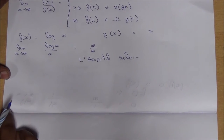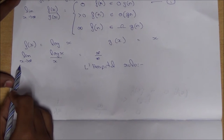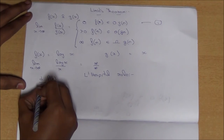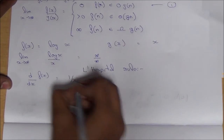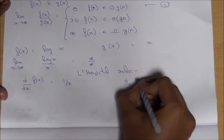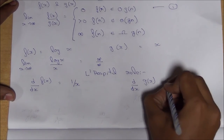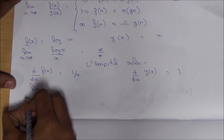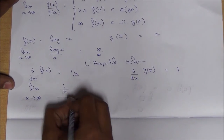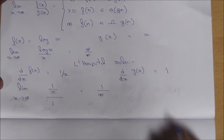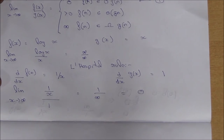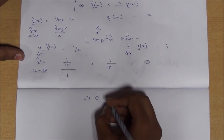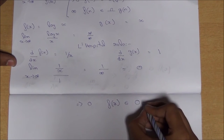By this rule, we need to differentiate f and g and then apply the limit again. Differentiation of f with respect to x will be 1 by x, and differentiation of g with respect to x will be 1. Now we repeat this step: limit x tends to infinity of (1/x) by 1, which is 1 by infinity, equal to 0. Since the answer is 0, we conclude that f of x belongs to big O.